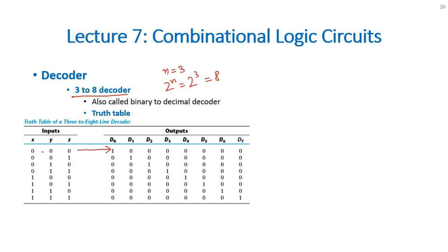For this combination where X, Y and Z, three of them are 0, the D0 will be 1 and all other outputs will be 0. For 001, the D1 will be high and all other outputs will be 0. For 010, the D2 output will be high. Similarly, for 111, the D7 output will remain high.